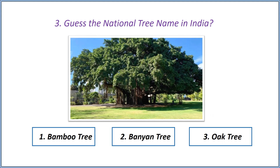Third question: guess the natural tree name in India. Options — first option: bamboo tree, second option: banyan tree, third option: oak tree. Answer is banyan tree.